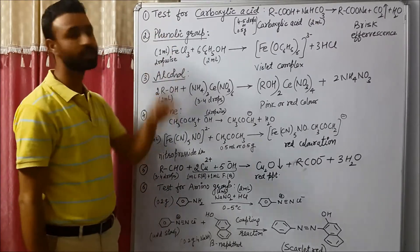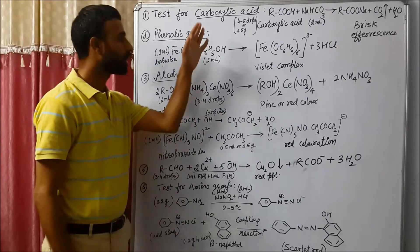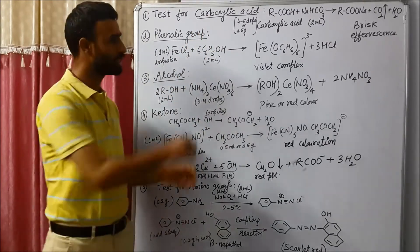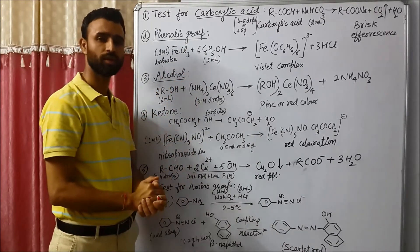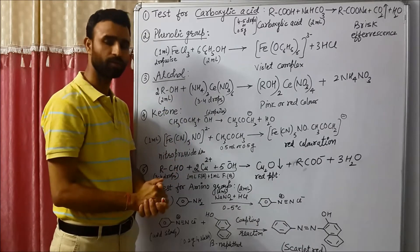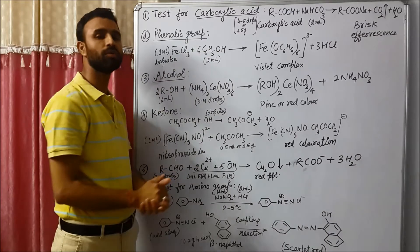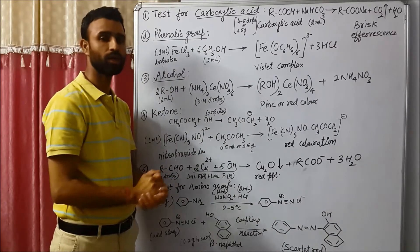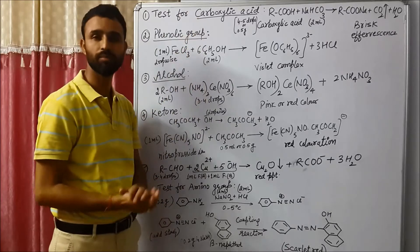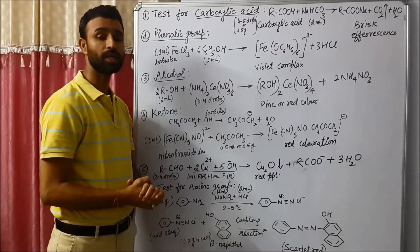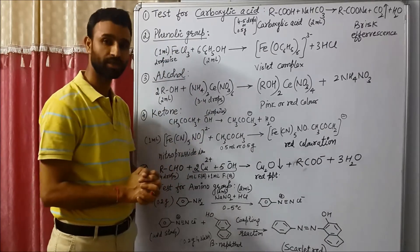See, first is test for carboxylic acid. Carboxylic acid, first we can take a few drops of solution of the organic compound and put it on blue litmus. So if blue litmus turns red, that means carboxylic acid may be present. But that is not a reliable test because phenol can also give that test.